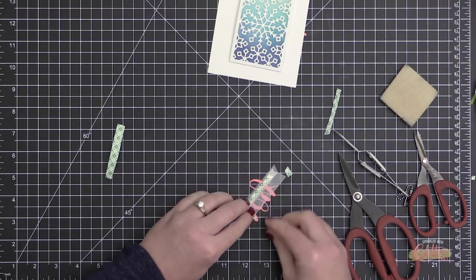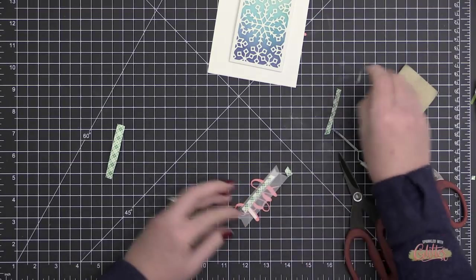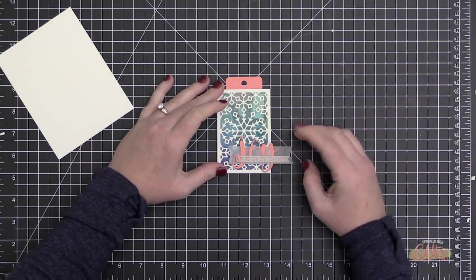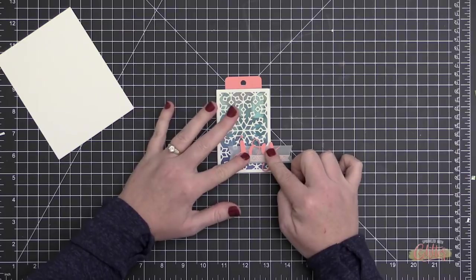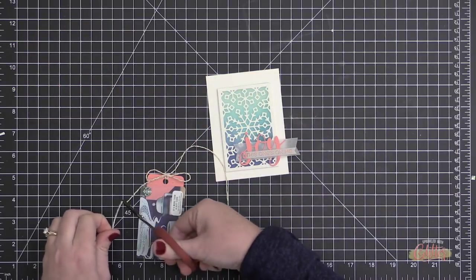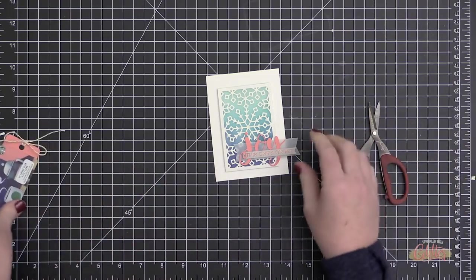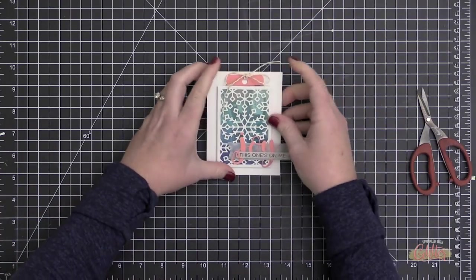So I trimmed it with my paper trimmer and then just cut the ends with my scissors into that banner shape. Now to adhere this over my pocket, I'm going to use a foam adhesive for that—I used a double layer of foam adhesive and I'm just adhering that right over the pocket.